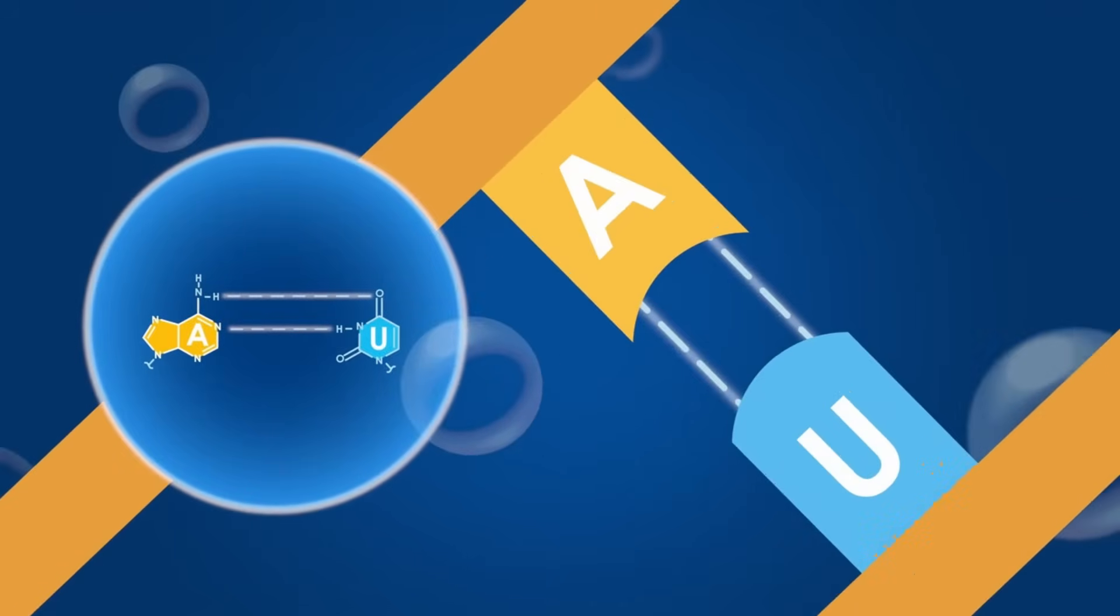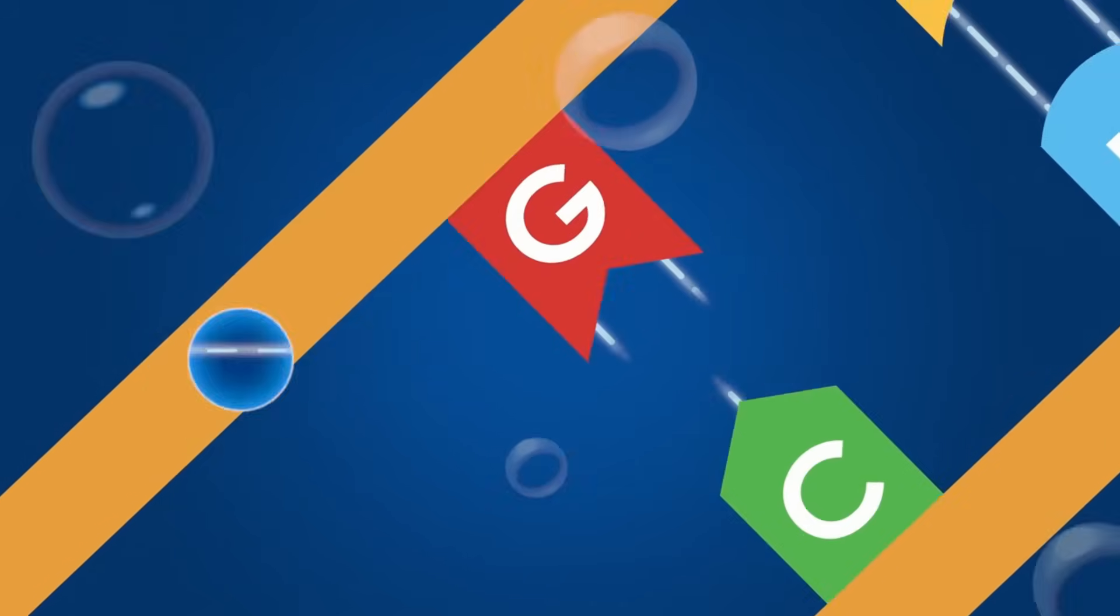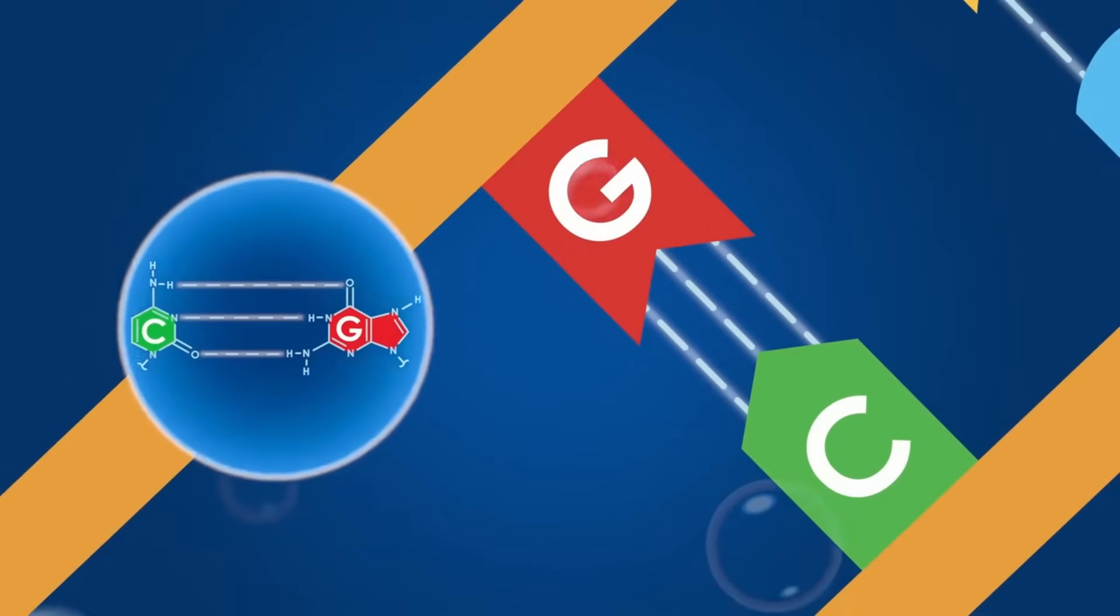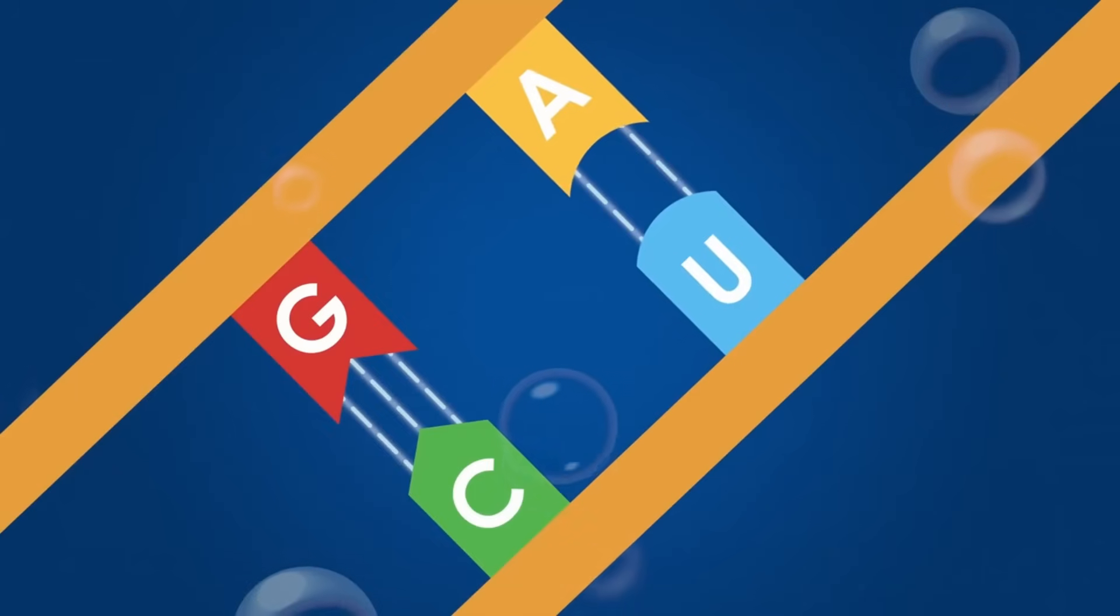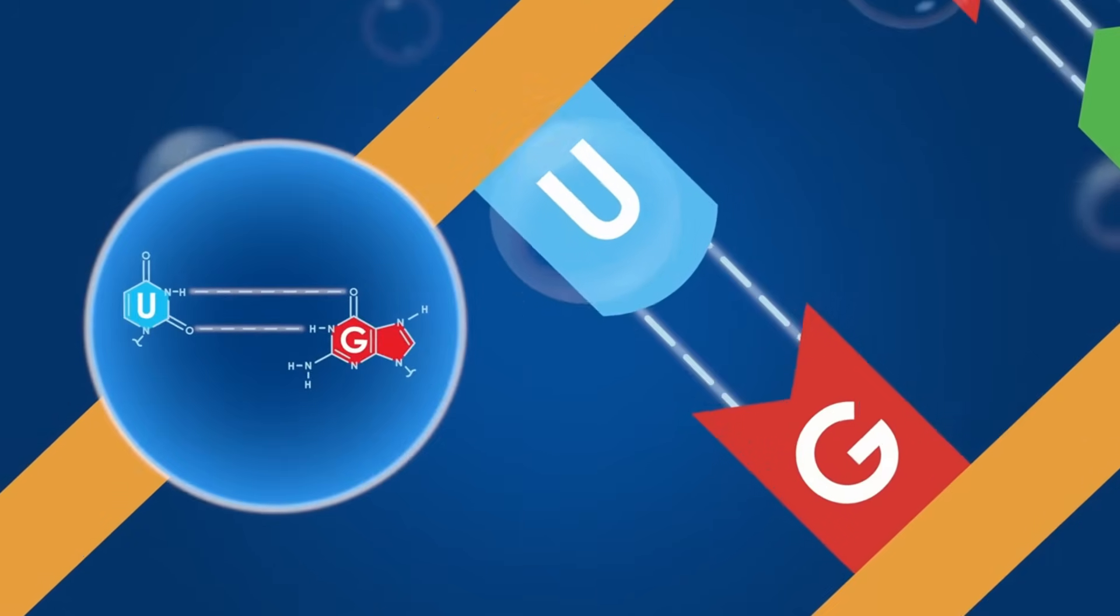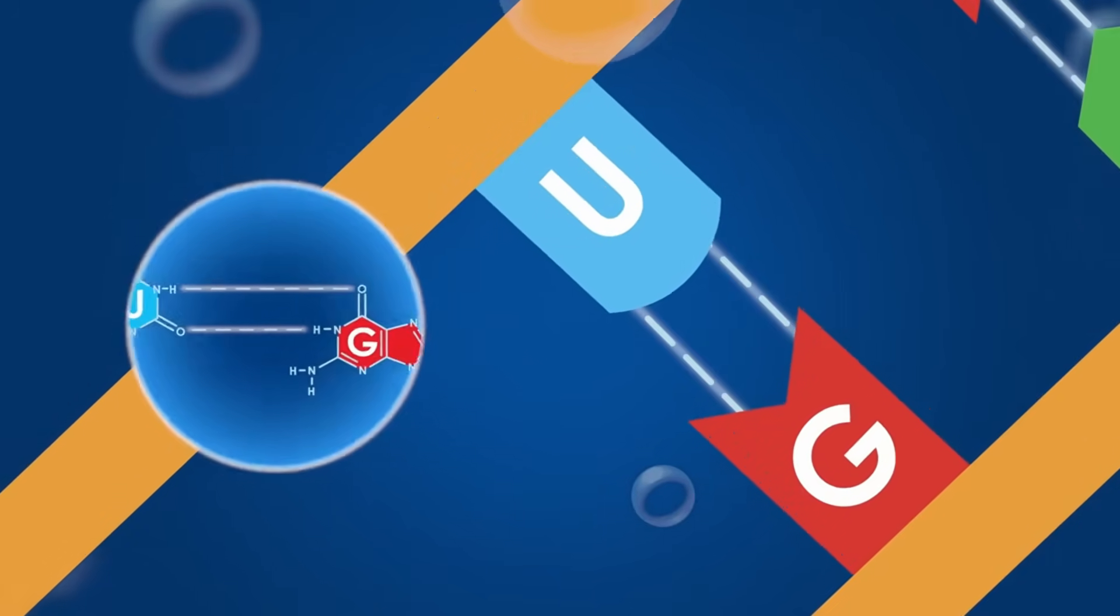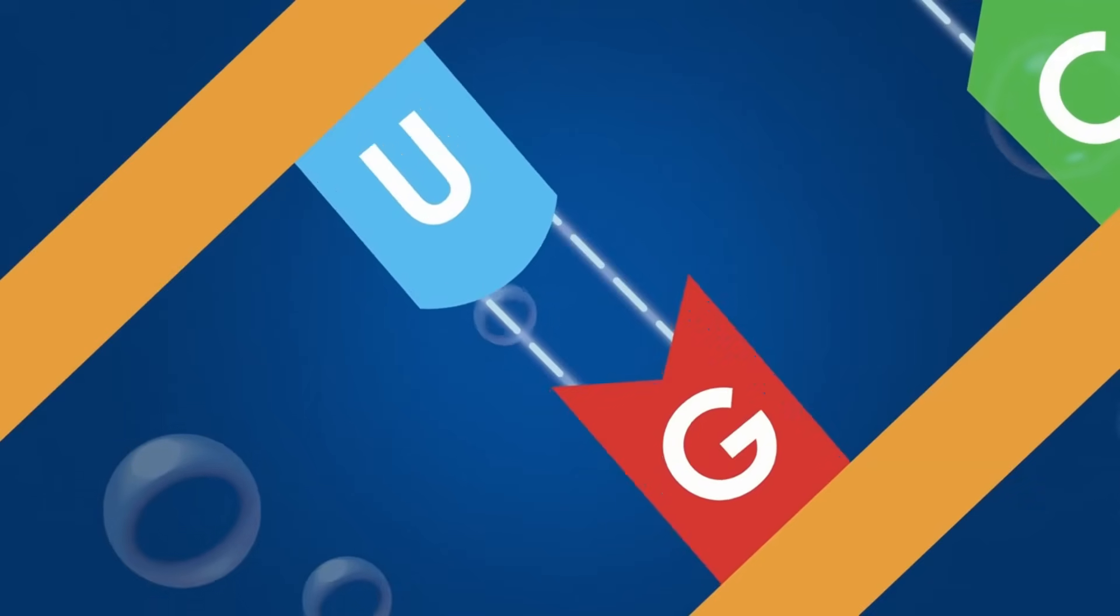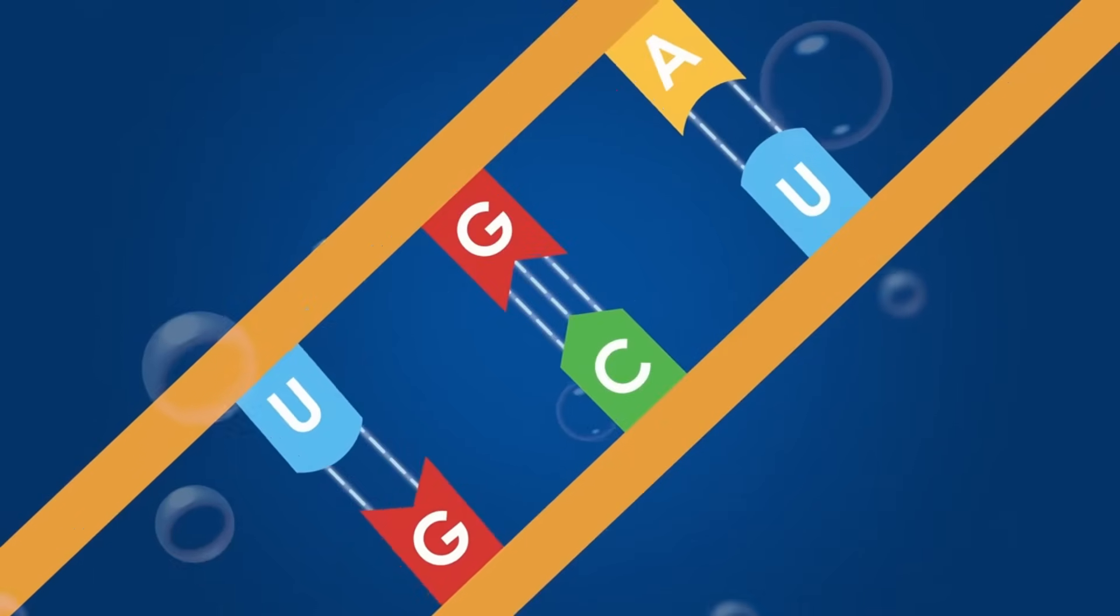AU base pairs have two hydrogen bonds, while GC base pairs have three hydrogen bonds, making them stronger and more stable. GU base pairs have two hydrogen bonds, but their geometry results in weaker stacking interactions and reduced stability.